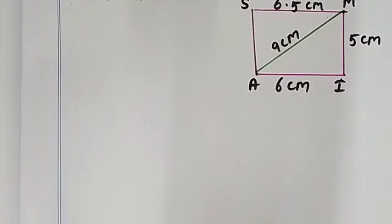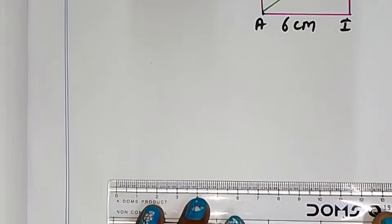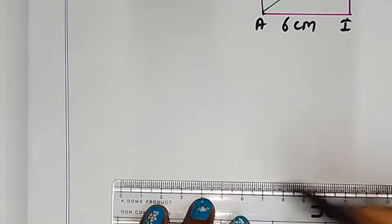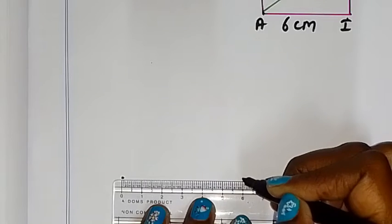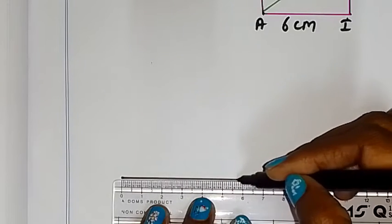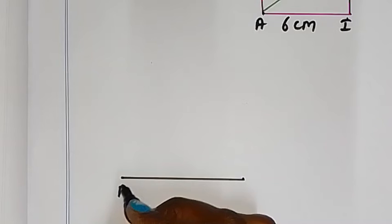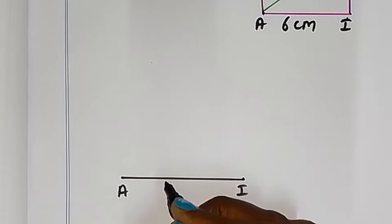First, base is AIMS. AIMS is equal to 6 cm. So, 0 to 6 cm. Correct. 6 is the 6th dot. So, I'm going to join then. Here is AIMS is equal to 6 cm.